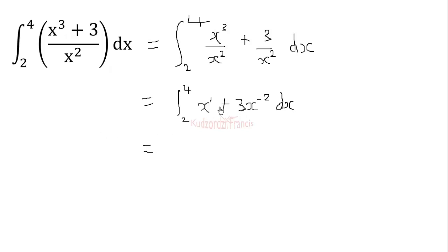Now, we do our integration. We add and divide by the result of the exponent. So we have x squared over 2 plus x exponent negative 1, because negative 2 plus 1 is negative 1, divided by negative 1. So from 2 to 4.